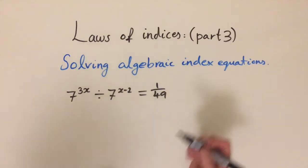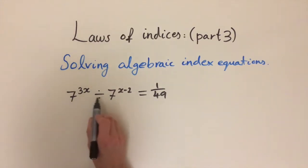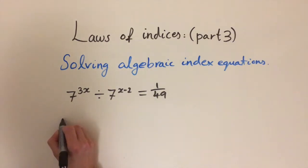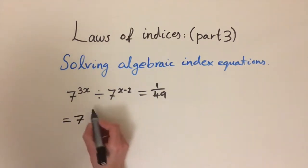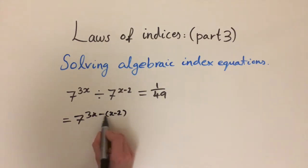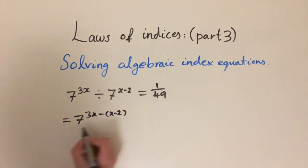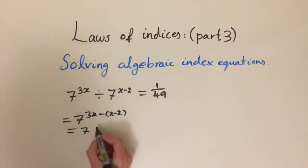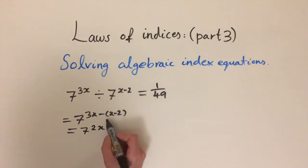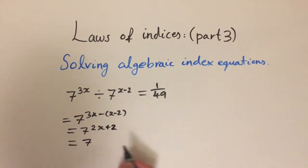Let's look at the left-hand side. We have a division, which corresponds to having a negative sign in the index. So the left-hand side equals 7 to the power of 3x minus (x minus 2). Distributing the negative sign and collecting terms: 3x minus x is 2x, and minus minus 2 gives us plus 2. We can factor out the 2 to write this as 2 times (x plus 2)... wait, actually this should be 2 times (x plus 1).